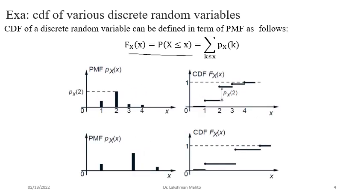Suppose you have a random variable taking values 1, 2, 3, 4. Only these possible values of x have positive probability mass function values. With respect to these possible values, the corresponding probability mass function is already given. If you are willing to find the CDF, apply the definition. Before x=1, if you want to find the value of CDF at x=0, it would simply be zero, because x is not observing any value there.